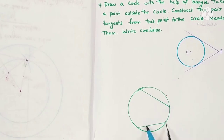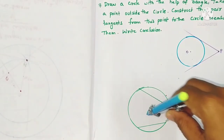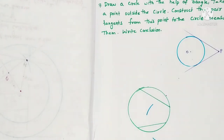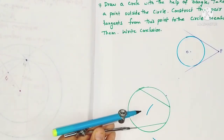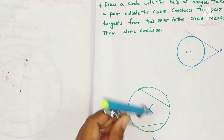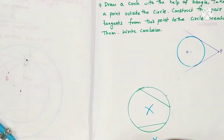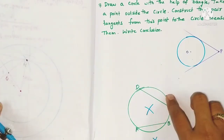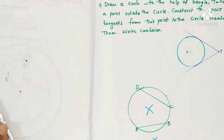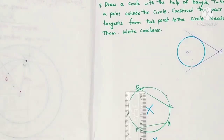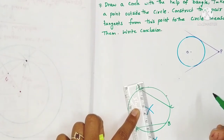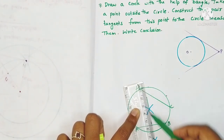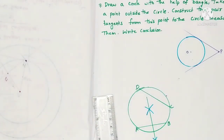To draw the perpendicular bisector, take more than half the length as radius. From point A and from point B, draw arcs on both sides. Then join the intersection points with the scale — this is the perpendicular bisector of AB.